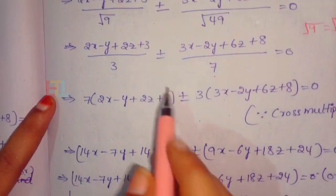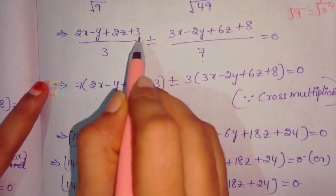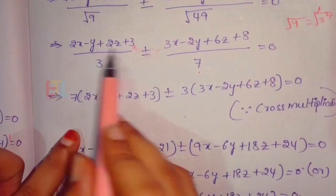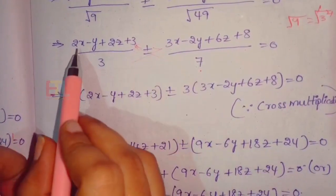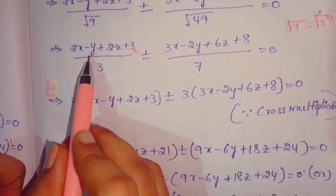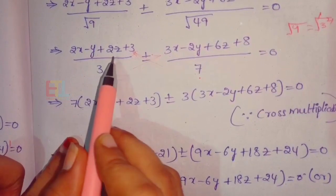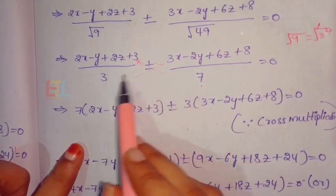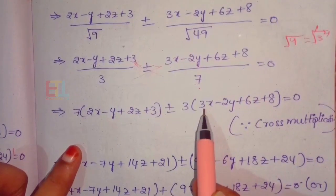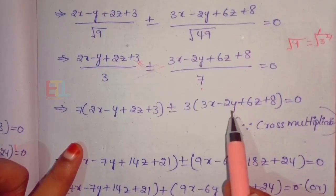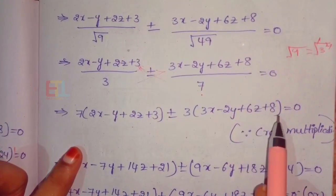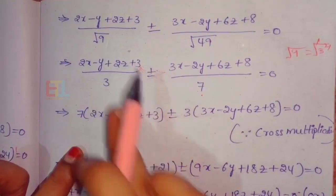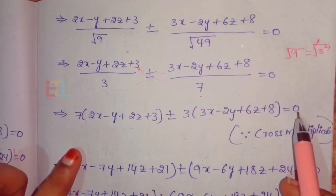Similarly, after simplifying, we proceed with cross multiplication. We get: 7 times (2x minus y plus 2z plus 3) plus or minus 3 times (3x minus 2y plus 6z plus 8) equals 0. Multiplying both sides and using transposition, we get the answer.